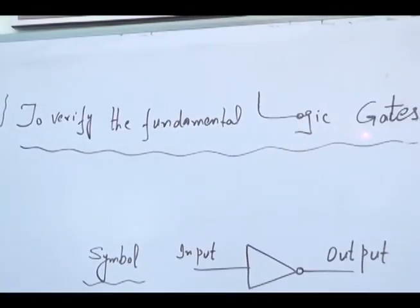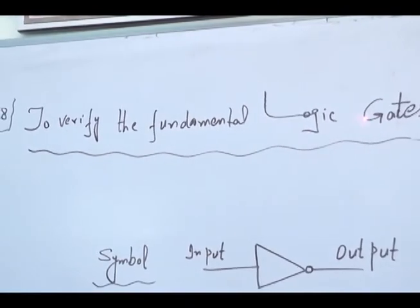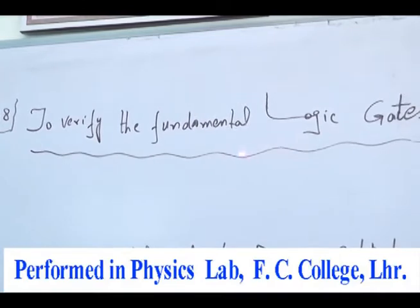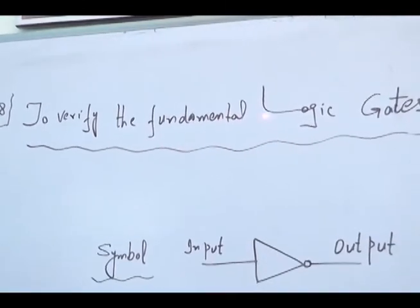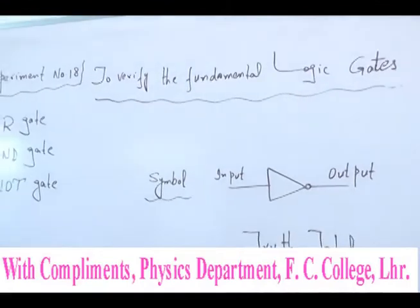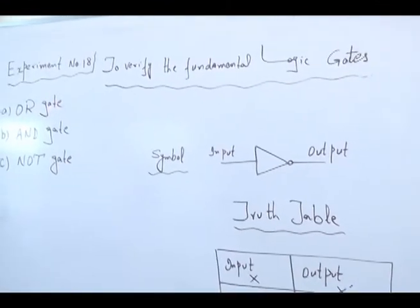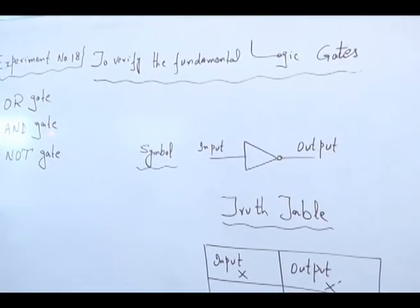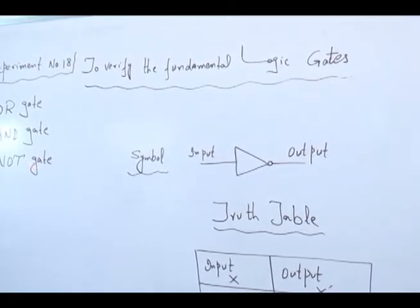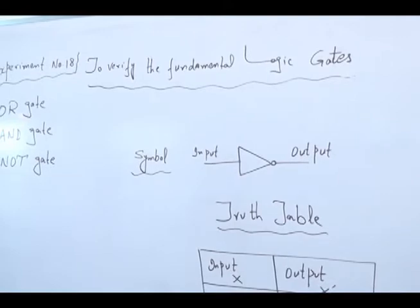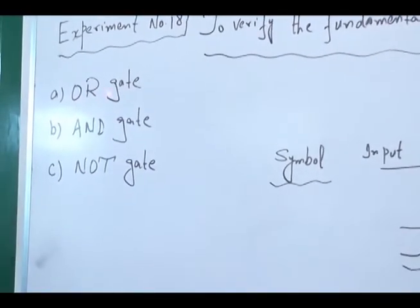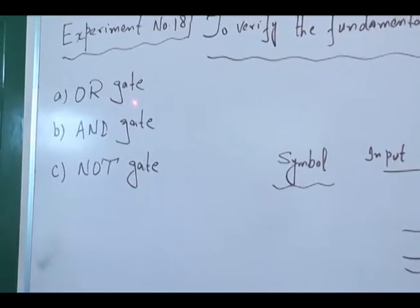What are logic gates? These are the decision-making circuits. There are three fundamental logic gates: the OR gate, AND gate, and NOT gate. The name of these gates is based on the function performed by each of these gates.